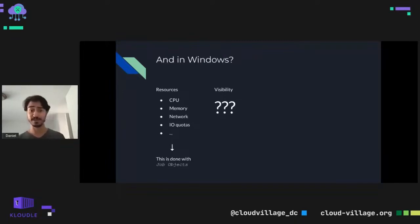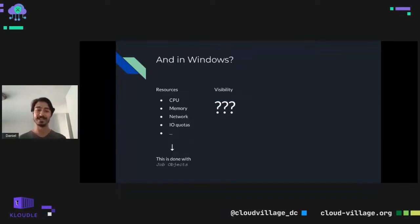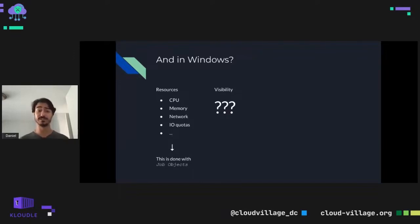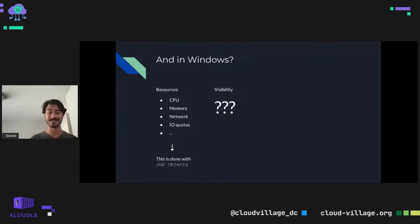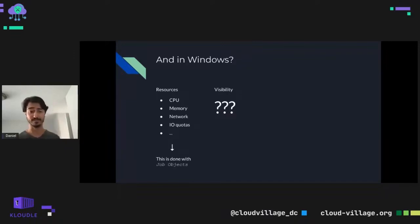Now let's move to Windows containers. In order to create a good solution, the same requirements need to be implemented. Luckily Windows has had a solution for resource limitation for years called job objects, which do pretty much the same thing as cgroups in Linux — nothing too interesting, but it's important to know the feature has existed for years. But what about visibility isolation?